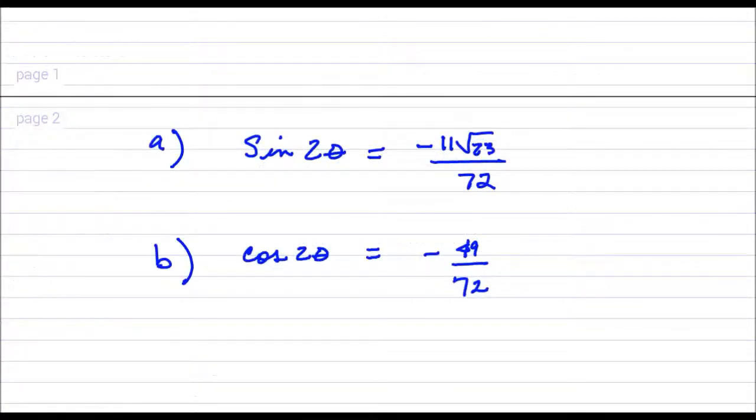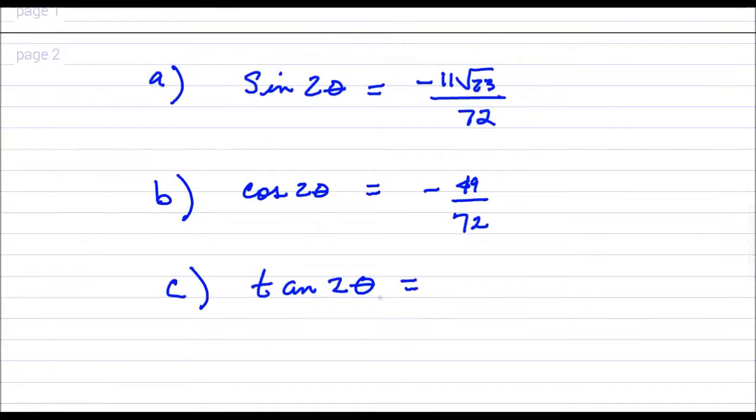We are ready to do part C of this problem, which is just to find the tangent of 2 times the angle. There is a formula for a double angle formula for tangent. However, since we found sine 2 theta and cosine 2 theta in parts A and B, I am just going to use that to our advantage to solve this part of the problem. And the reason I can use those two is because tangent 2 theta is the same thing as the sine of 2 theta divided by the cosine of 2 theta.